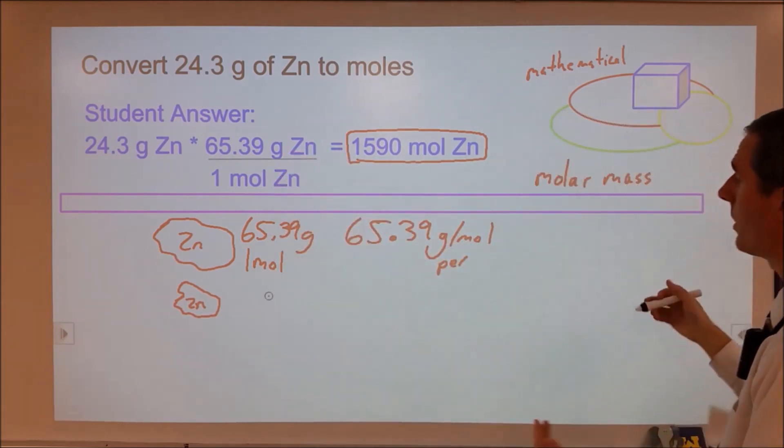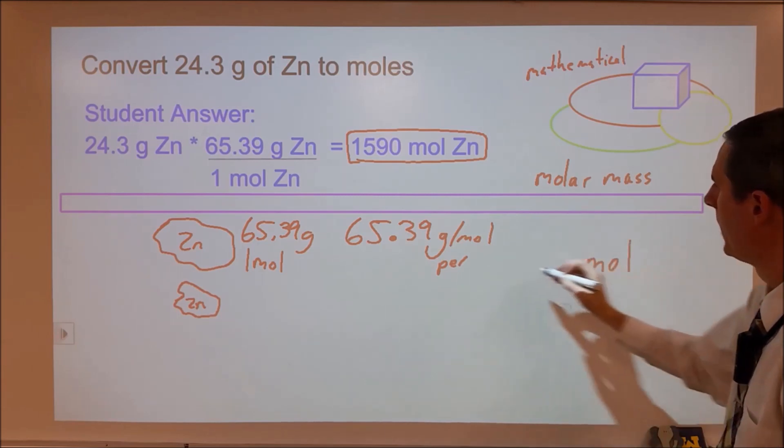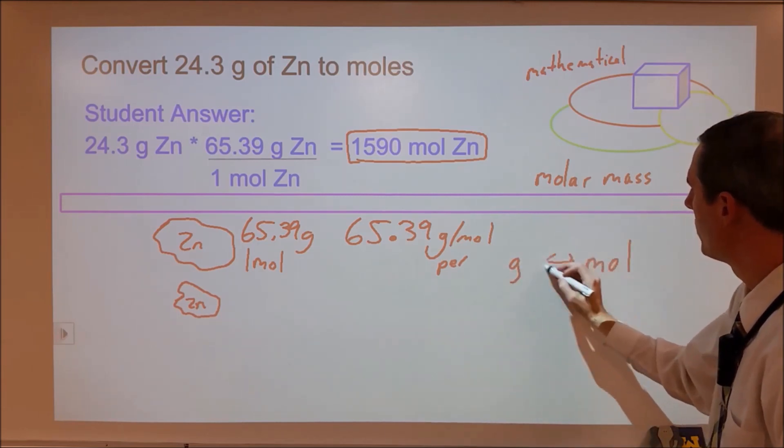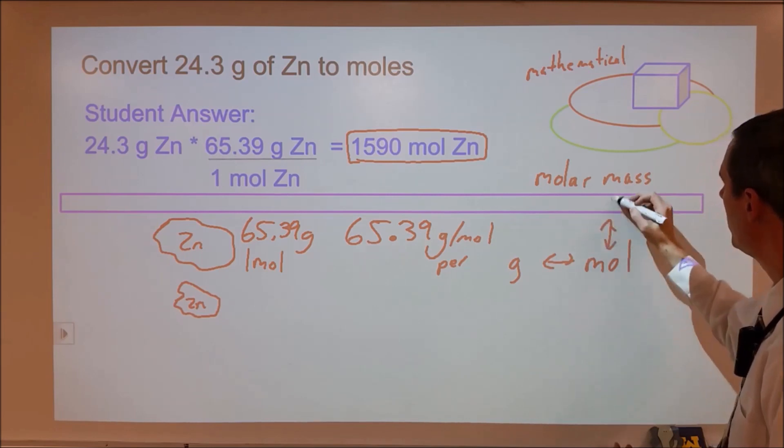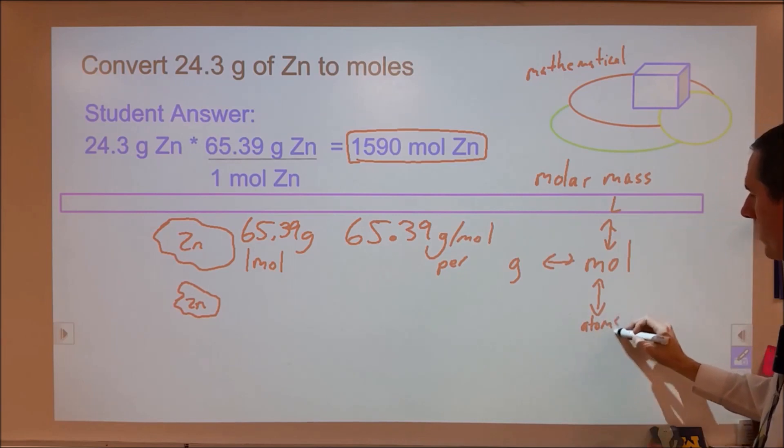And so the disconnect between the answer to me is more concerning than the fact that these were flipped. Now that student probably was taught in a way that was algorithmic, meaning that they were shown something like a mole map where they had grams changing to moles, changing to maybe liters, changing to particles, atoms, molecules, formula units, etc.